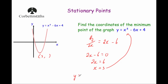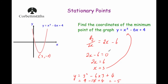So y equals 3 squared subtract 6 times 3 plus 4. We get 3 squared is 9, 6 times 3 is 18, so minus 18 plus 4. 9 take away 18 is minus 9, plus 4 equals minus 5. So the y-coordinate of this point is minus 5, and the coordinates of this minimum point are (3, −5). To find the coordinates of a minimum point, differentiate, put it equal to zero, find x, then find y.